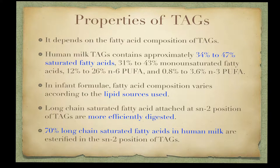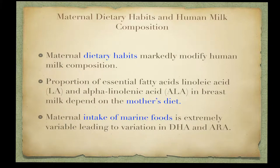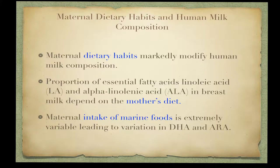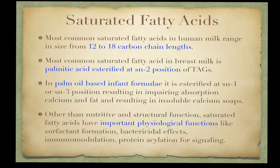The fatty acid composition of human milk lipids is markedly modified by maternal dietary habits. For example, the proportion of essential fatty acids — linoleic acid and alpha-linolenic acid — in breast milk depends on the mother's diet. Maternal dietary intake of marine foods is extremely variable and explains the wide range of docosahexaenoic acid (DHA) content in breast milk. Animal milks always provide preformed endogenous arachidonic acid, so its content in human milk is quite stable worldwide despite marked variations in dietary intakes and lifestyles.